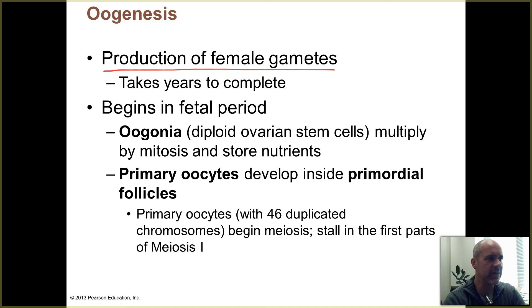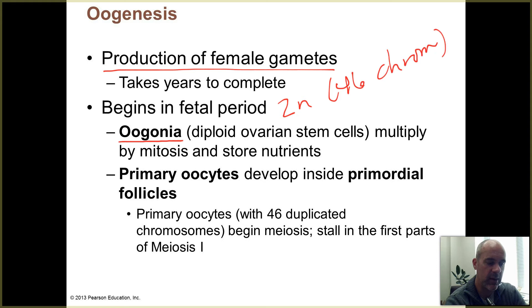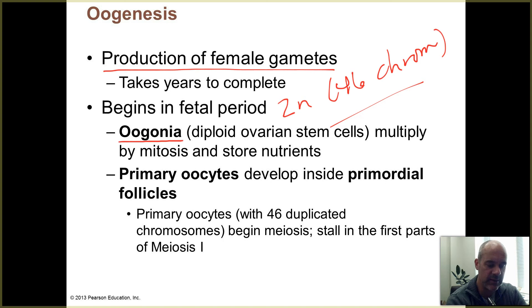Oogenesis actually begins before birth. Egg cells are already present in the ovaries of a developing fetus. Those cells are called oogonia and are diploid cells — 2n with 46 chromosomes — and they multiply by mitosis. They serve as stem cells that are a source of oocytes and store nutrients. These are big cells with a large volume of cytoplasm, much higher than typical cells in the body.